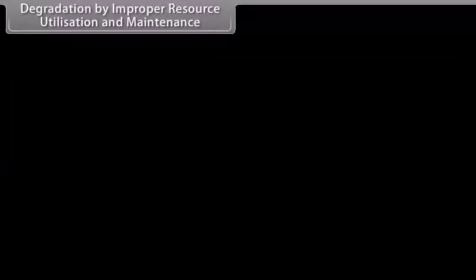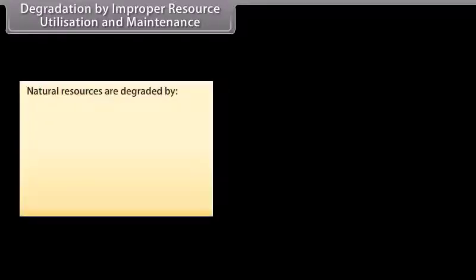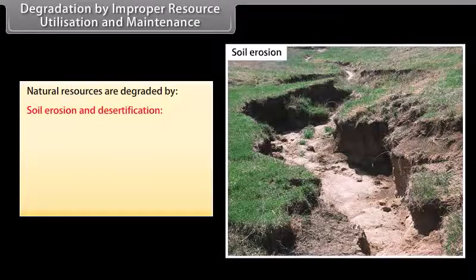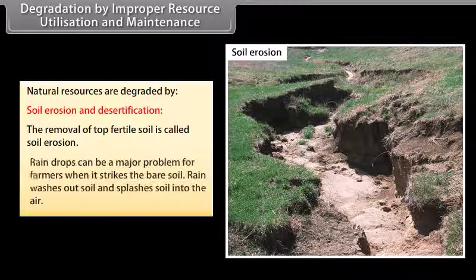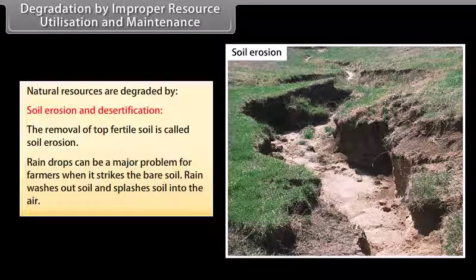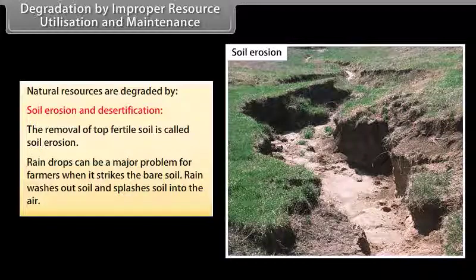Natural resources are degraded by improper resource utilization and maintenance, including soil erosion and desertification. The removal of top fertile soil is called soil erosion. Raindrops can be a major problem for farmers — when rain strikes bare soil, it washes out and splashes soil into the air.